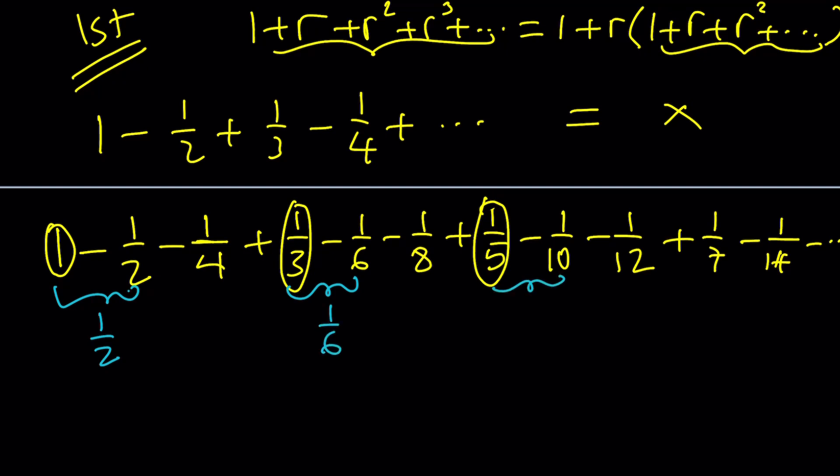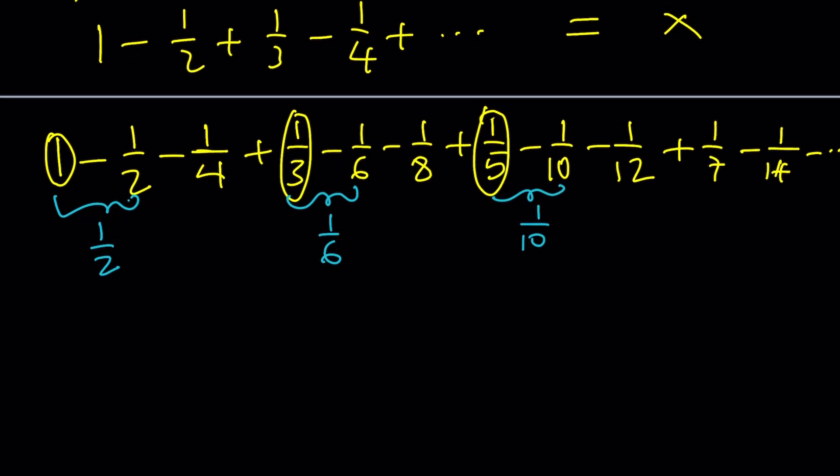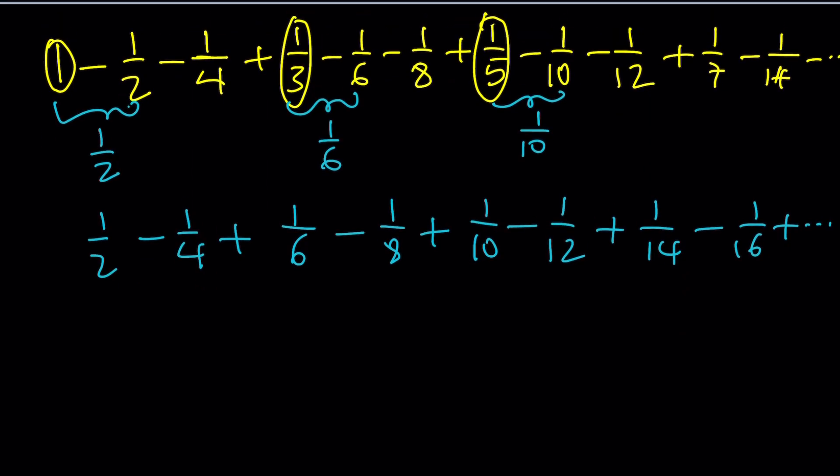So you kind of get something like this. 1 half minus 1 fourth plus 1 over 6 minus 1 over 8 plus 1 over 10 minus 1 over 12, which is 1 over 14, so on and so forth. So basically what happens here is we got rid of the odd numbers, which is really cool. But then that's not the only thing we're going to do.